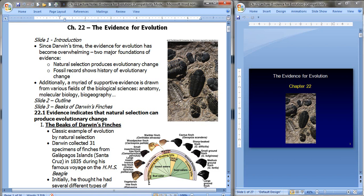Now, since Darwin's time, the evidence for evolution has really become overwhelming, and it's quite amazing that he was able to observe as much as he did, given the lack of technology. Since then, there have been two major foundations of evidence. First, natural selection produces evolutionary change, and the fossil record shows the history of evolutionary change. It shows us how organisms have changed over time. Beyond that, quite a bit of supportive evidence is drawn from various fields of the biological sciences, anatomy, molecular biology, and even biogeography.